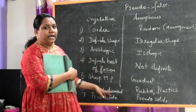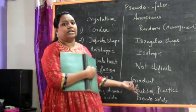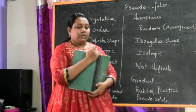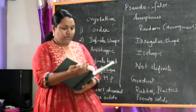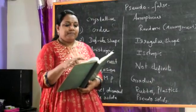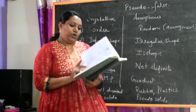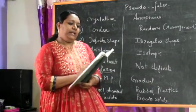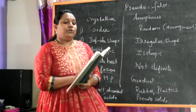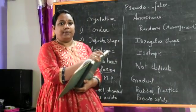Examples: sodium chloride and diamond are crystalline solids. Rubber and plastics are amorphous (pseudo) solids. Refer to page number 178 for the tabular differences. Next, we will move to page number 183 — the calculation of the total number of atoms in unit cells.